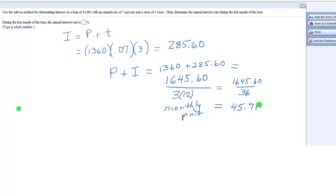Now, during the last month of the loan, this is the payment that you're paying, because every month you pay the same amount. So out of that payment, the principal, we have some principal and we have some interest. The principal out of this $45.71 is equal to the original loan amount, which was $1,360 divided by 36.